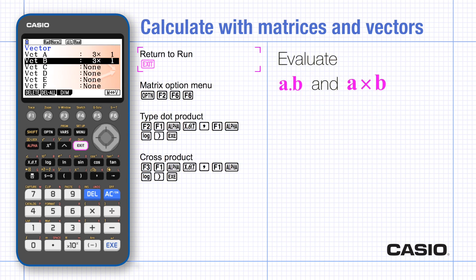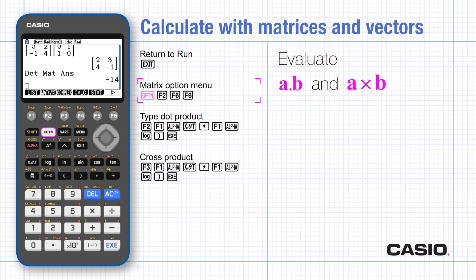Return to run. Use Option to find the vector menu and then use the arrow to find the third set of options. Type the dot product first and then the two vectors using the alpha key and a comma to separate them. Execute gives the value zero in this case.